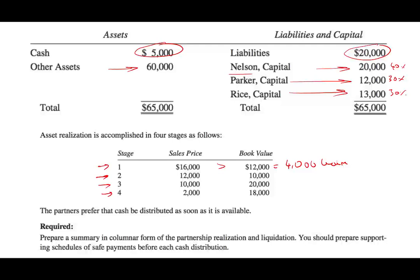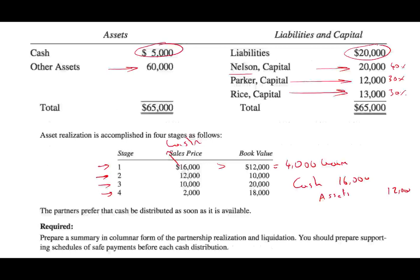They sold it for $16,000 — that's the cash they received. For stage one, the journal entry: debit cash $16,000, credit the asset at its book value of $12,000, and record a gain of $4,000.